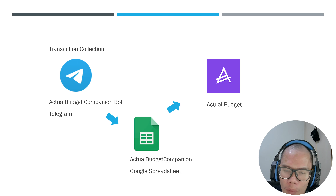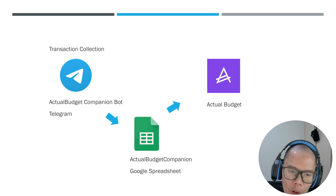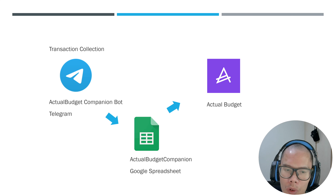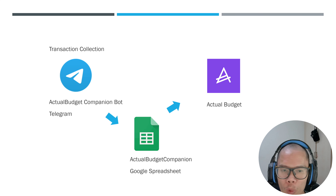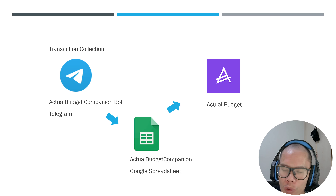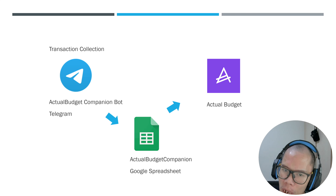When mobile phones became smarter, budgeting applications took advantage by making everything all-in-one. The advantage is that whenever you spend, you can just immediately launch the app and enter the transaction. However, Actual Budget does not have a mobile application.